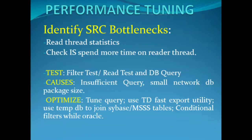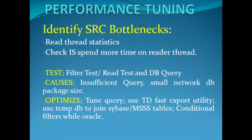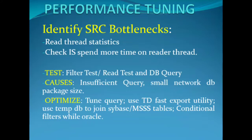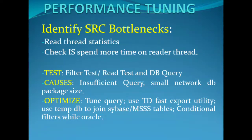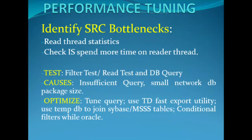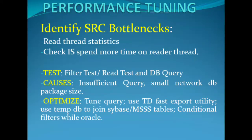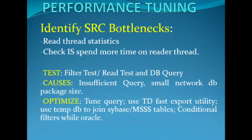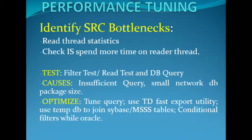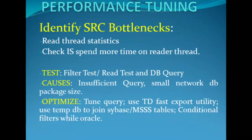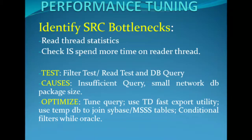To identify source bottlenecks, read the thread statistics in the session log. When the Integration Service spends more time on the reader thread than the transformation or writer threads, you have a source bottleneck. There is a filter test and a read/DB query test. For the filter test, place a filter after the source qualifier and mark it as false so records don't flow further. If the session runs longer than before, that indicates a source bottleneck.